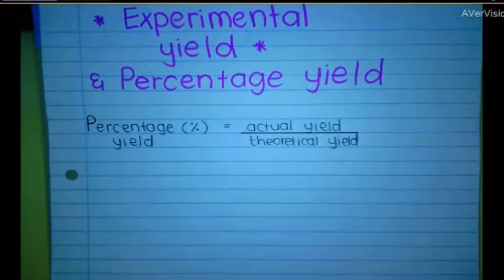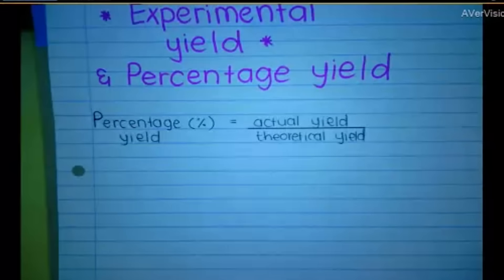Experimental yield and percentage yield. So basically what this is, is during chemical reactions that we carry out in a lab, we have a theoretical yield. And what that is, it's basically the products that we expect to obtain. So in theory, in a perfect world, what do I expect to obtain if I run this reaction?